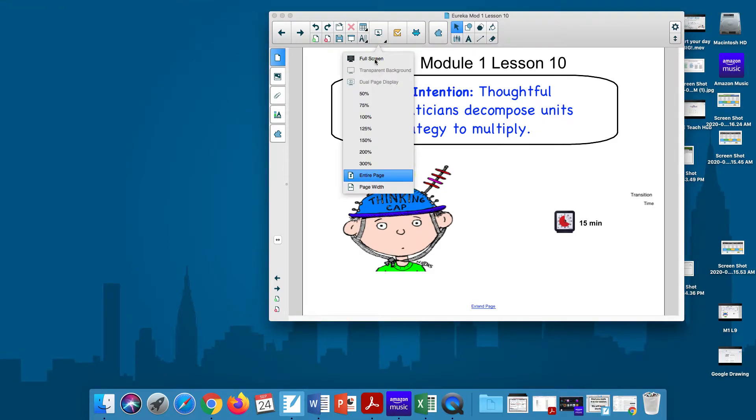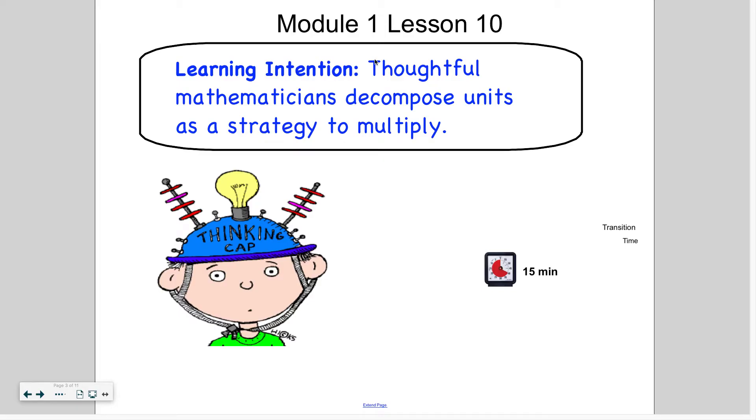Hi scholars, welcome back to another video. Today we're completing module 1 lesson 10. As you may have noticed we've skipped lesson 9 because it's very similar to lesson 10 and I feel it's a little more confusing the way they go about solving, so I thought we should just skip ahead to avoid the confusion. So let's start with our learning intention. Thoughtful mathematicians decompose units as a strategy to multiply.